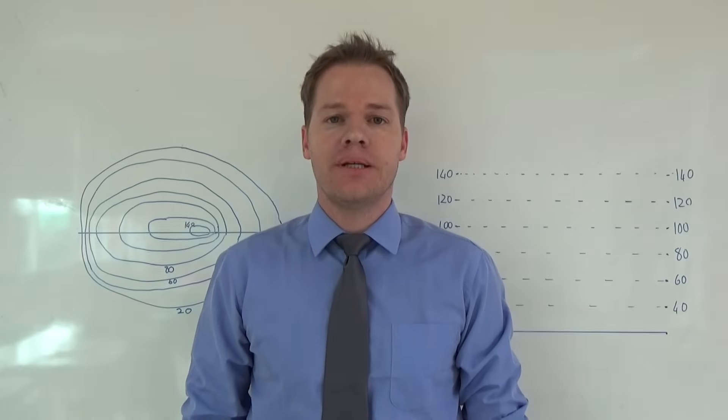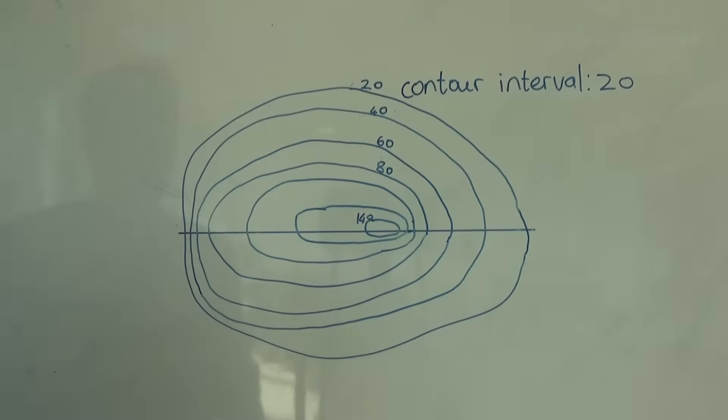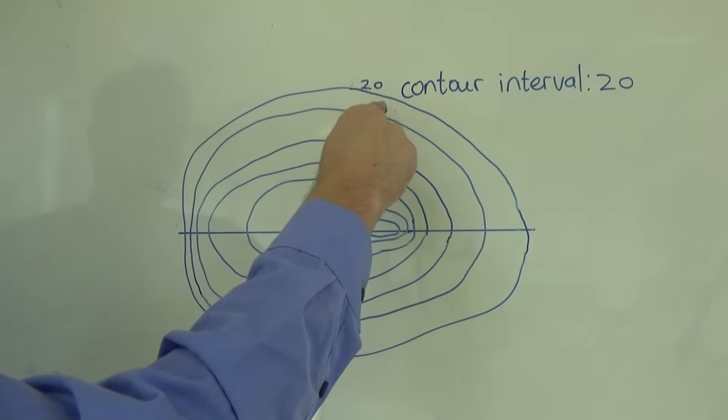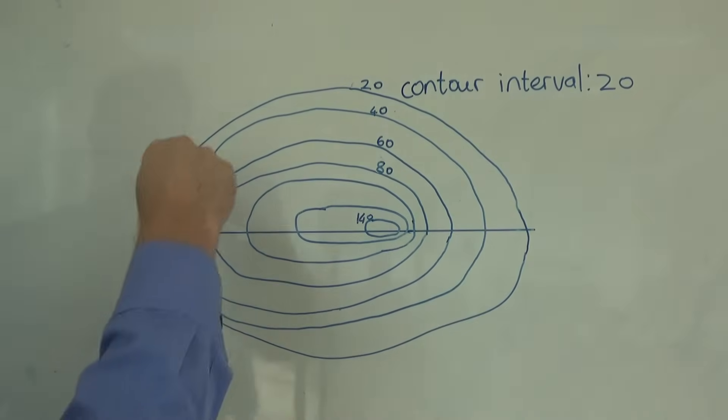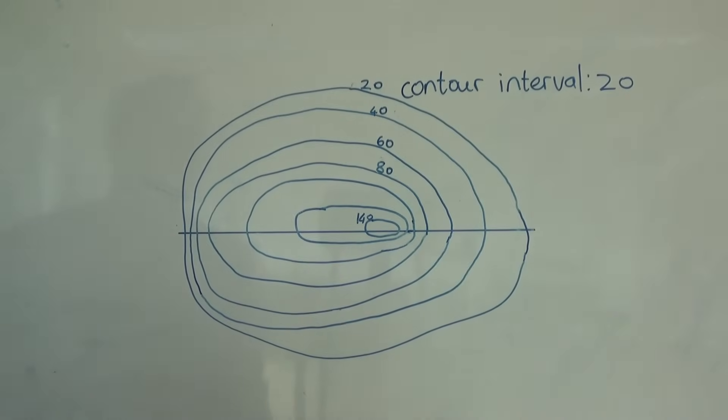So here you can see the contour lines. Bear in mind that if you see a number 20 over there, then it means every single place on this contour line over here is 20 meters above sea level, doesn't matter where you go. You might also find that there is a note on your map telling you exactly what the contour interval is.